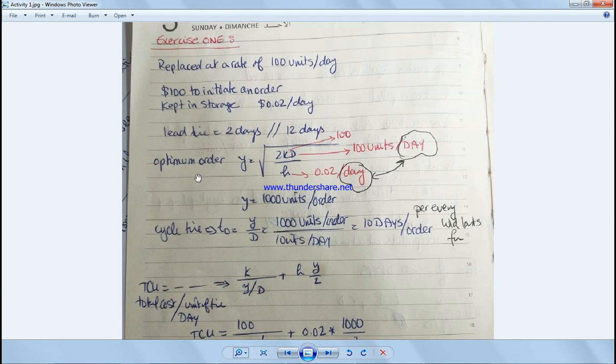We start with optimal order, as we said before, is y equals square root of 2kD over H. You always have to make sure the units of D and H are both in the same unit of time - it could be days, it could be hours, it could be years, but the same unit of time.